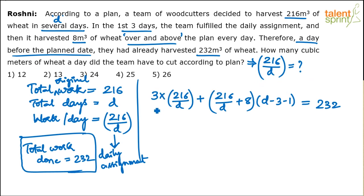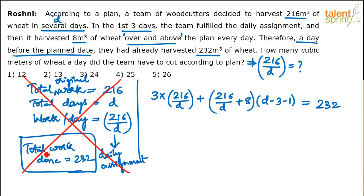If we know the number of days they needed to finish the work, then per day they would do 216/d — that's the whole idea. We are solving for d from that one equation. This is one way of doing it. Do not go by the length of the explanation; the actual steps to write on paper are minimal. The equation and solving for d is all you need.